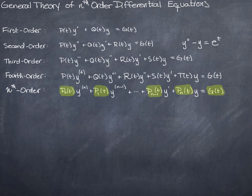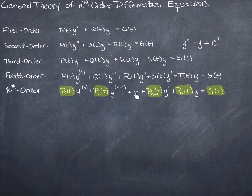This notation is just what your textbook uses, for consistency. You'll notice that the derivatives are going up: I have the zeroth derivative, the first derivative, the second, third, fourth, and so on — and then the n minus first derivative, and finally the nth derivative. That's what makes this an nth order equation.